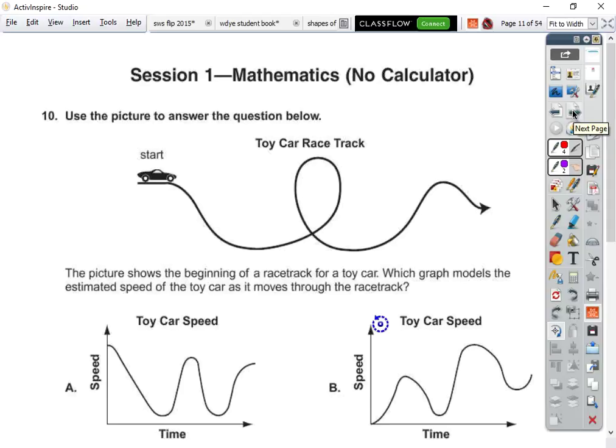Use a picture to answer the question. The picture shows the racetrack. What graph models the estimated speed of the car toy as it moves through the racetrack? So we are going to have the speed of the racetrack right here is zero. This is going to be a very high speed. Here it's going to be a low speed. Here it's going to be another high speed. Here it's going to be a low speed and then it's going to tail up just a little bit.